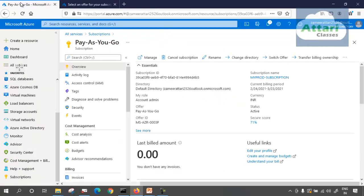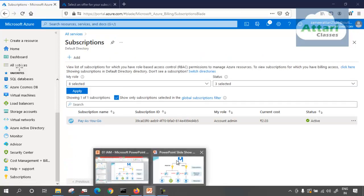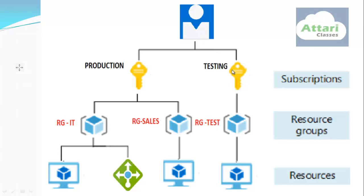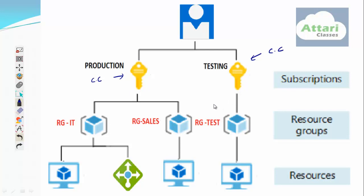We have seen in the diagram that we can create multiple subscriptions. One subscription is enough, but if your company feels that you want a separate payment method — a separate credit card for your production bill and a separate credit card for your testing servers — you can create one subscription for your production environment and one for your testing environment. That makes life easier. You can set separate budgets, and a separate bill will occur at each subscription level.